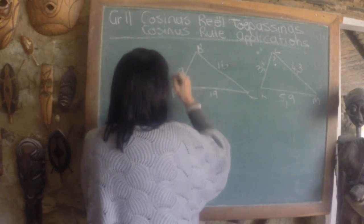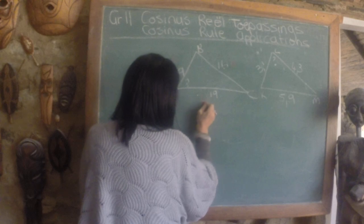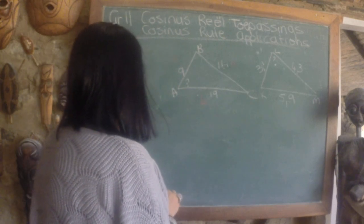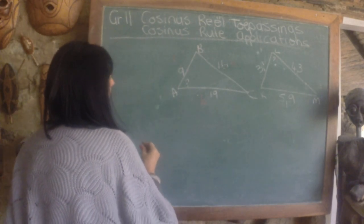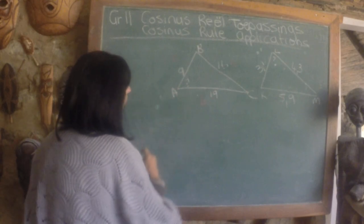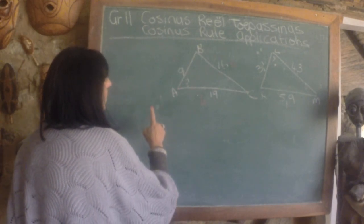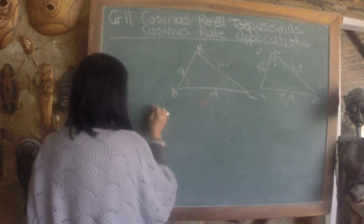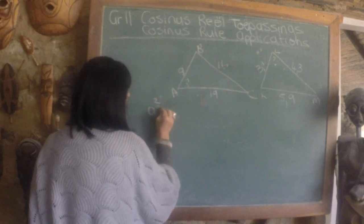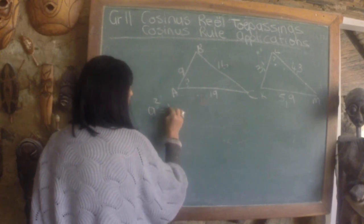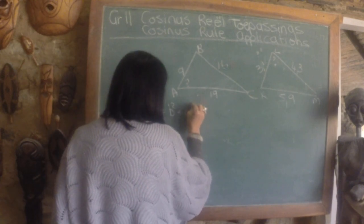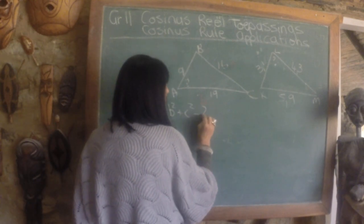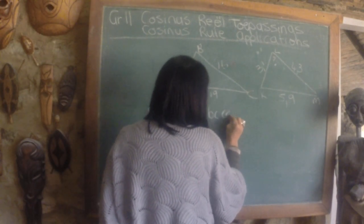a small c and a small b. Then you can write your cosine theorem. We need angle a so we gonna start with small a. So we're going to say a squared is equal to b squared plus c squared minus 2bc cos of a.